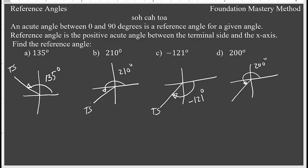210 is above 180, so it goes in the third quadrant. Negative 121 going in this direction — 90 here and then more comes here. 200 degrees goes the same way. Now, where is my reference angle? The first one — my reference angle is here, between the terminal side and the x-axis in the positive direction.